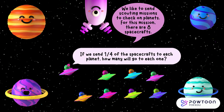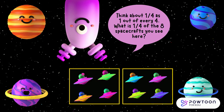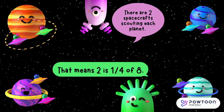We like to send scouting missions to check on planets. For this mission, there are eight spacecrafts. If we send one fourth of the spacecrafts to each planet, how many will go to each one? One out of every four — what is one fourth of the eight spacecrafts you see here? Hold your answer up in the air on your fingers. There are two spacecrafts scouting each planet. That means two is one fourth of eight.